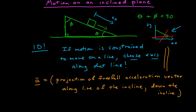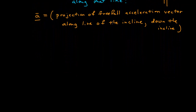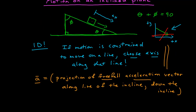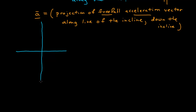So let's calculate the magnitude — the projection of the freefall acceleration vector along the line of the incline. To do that, I need to set up a coordinate system that has the freefall acceleration in it, as well as a coordinate system for my incline itself. I'm going to draw a schematic — pay close attention, as this will be very useful in incline problems.